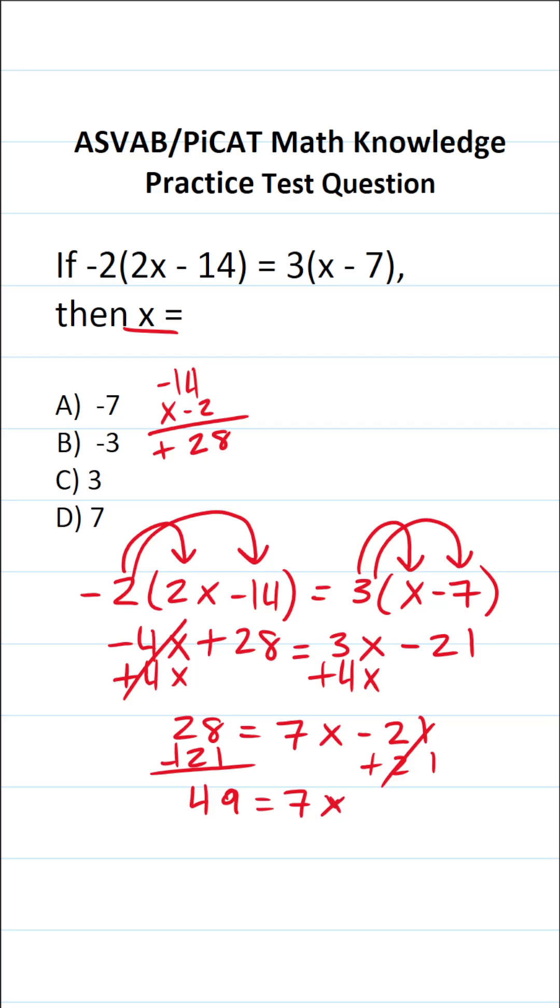Again we want to solve for x, so the next thing we're going to do is divide both sides of this equation by 7 to get x by itself. 49 divided by 7 is 7. So we could see x in this case is 7. So this one is going to be D.